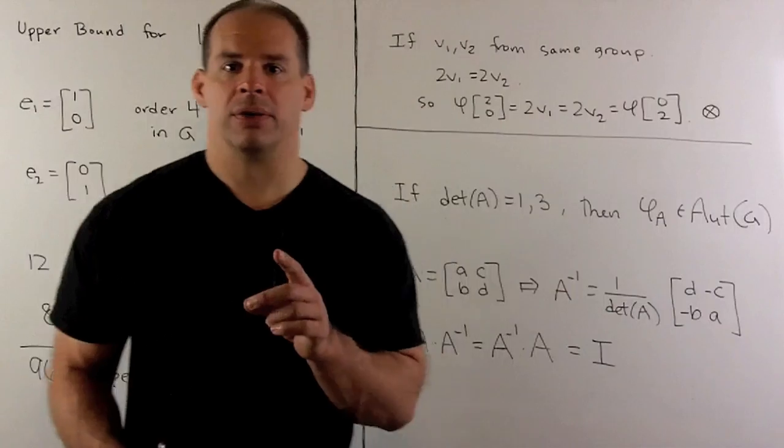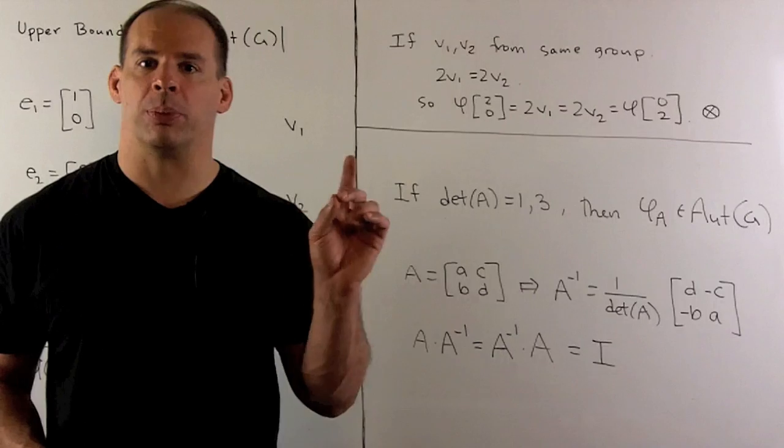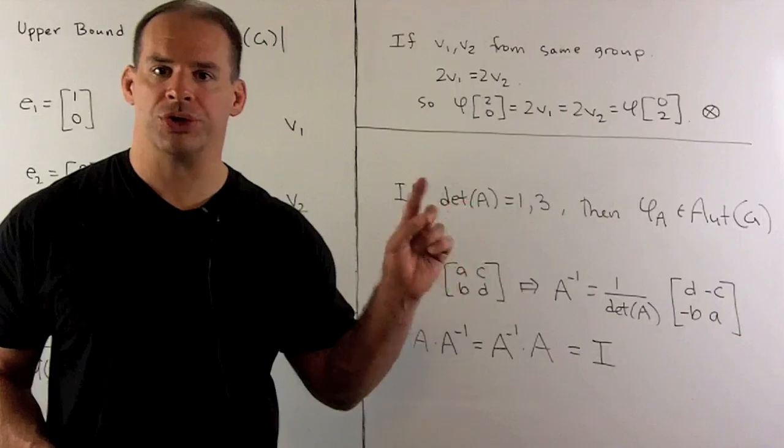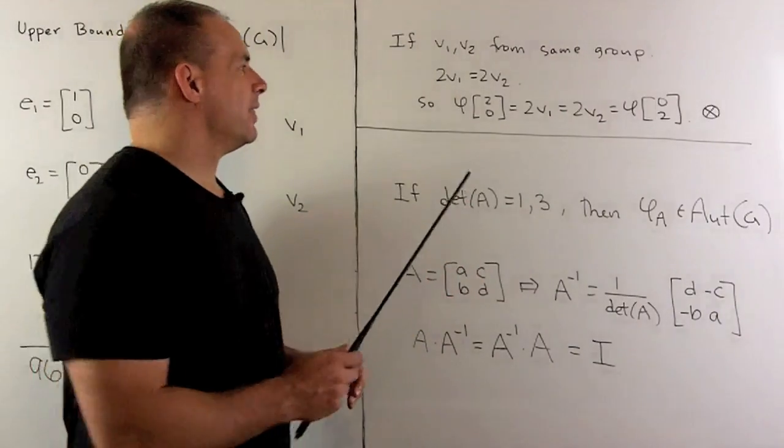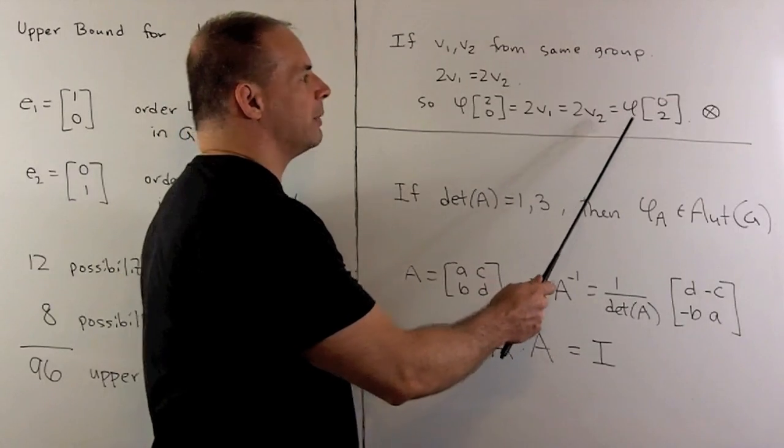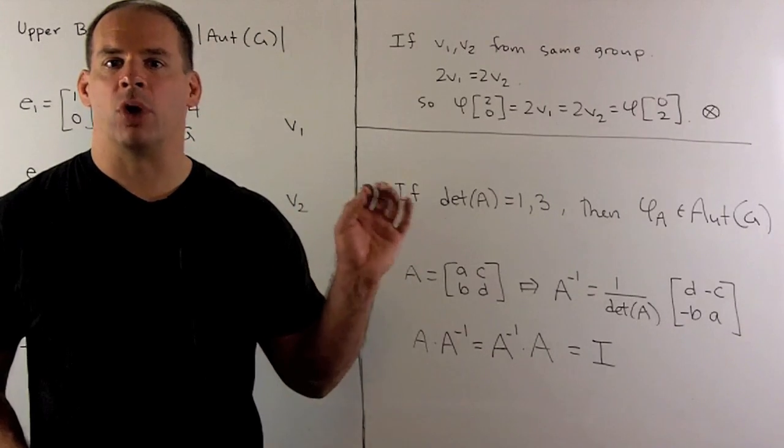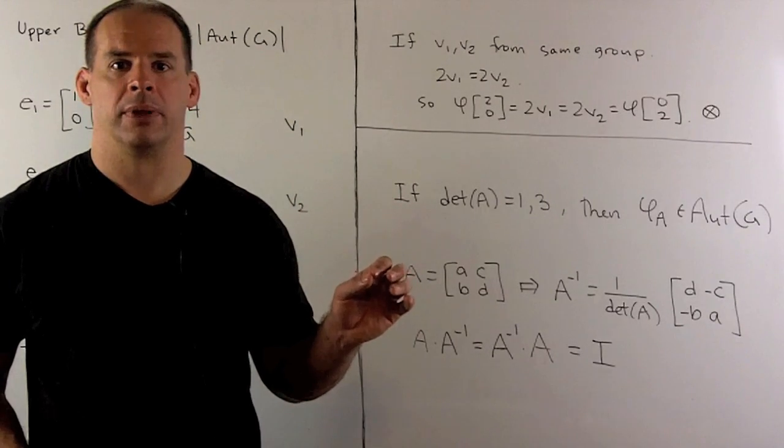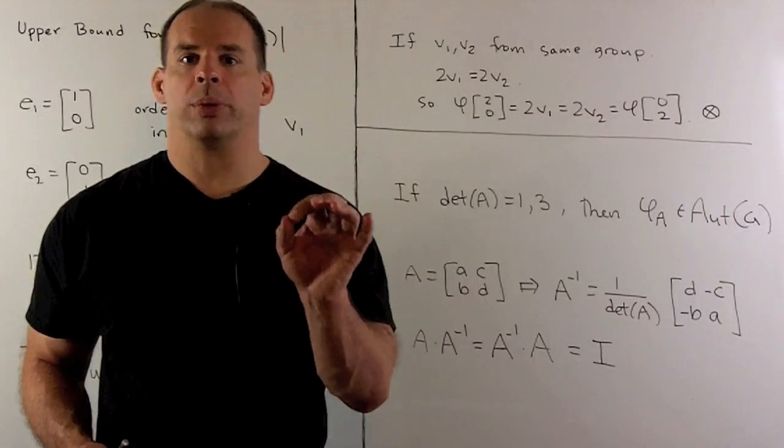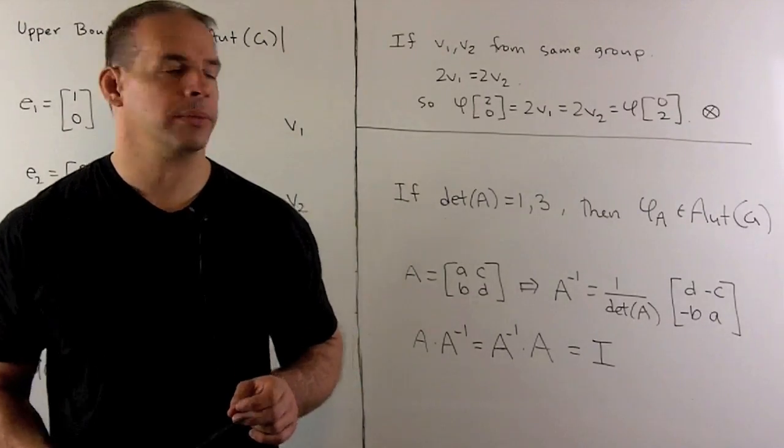Now, why 8 for V2? If V1 and V2 are from the same group in the partition of our previous board, that means twice V1 is equal to twice V2, an element of order 2. Then, phi 2v0 is going to be equal to that element of order 2, which is also going to be equal to phi 02. So, that means phi is not one-to-one, so we don't have an automorphism. That means once I pick V1, we have to discard everyone else in the group. So, that means only 8 possibilities for V2.